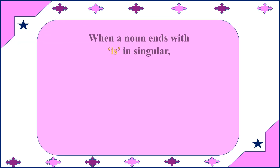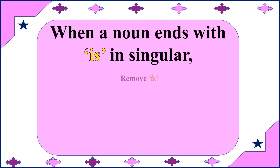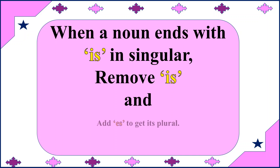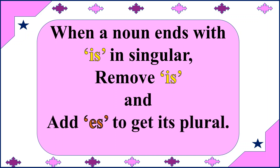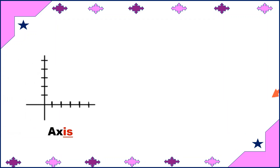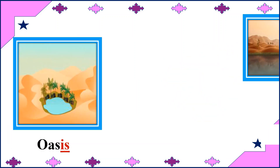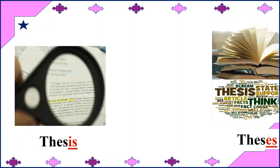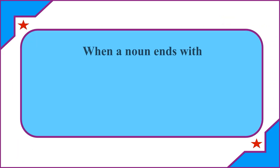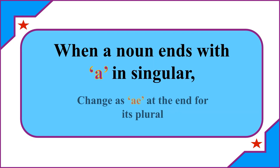When a noun ends with the letters '-is' in singular, remove '-is' and add the letters '-es' to get its plural. For example: axis → axes, ellipsis → ellipses, oasis → oases. When a noun ends with the letter '-a' in singular, change the '-a' to '-ae' at the end for its plural.